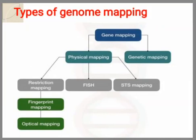There are two types of genome mapping: physical mapping and genetic mapping. Physical mapping is further divided into three types: restriction mapping, which is done with the help of restriction enzymes; FISH, fluorescent in-situ hybridization mapping; and STS mapping, which means sequence tag site mapping. Restriction mapping is again divided into two subtypes: fingerprint mapping and optical mapping.